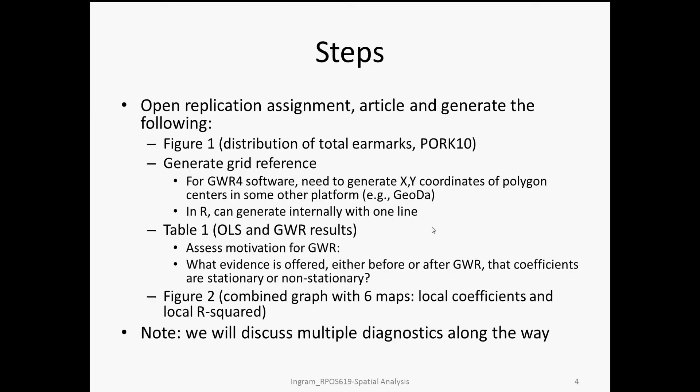Looking specifically at the replication steps: first, we're going to reproduce Figure 1, which was the basic descriptive distribution of total earmarks — the variable labeled PORC10 in the data set. Then we need to generate a grid reference, the XY coordinates, that are necessary for every geographically weighted regression. This video is dedicated to the replication in R.